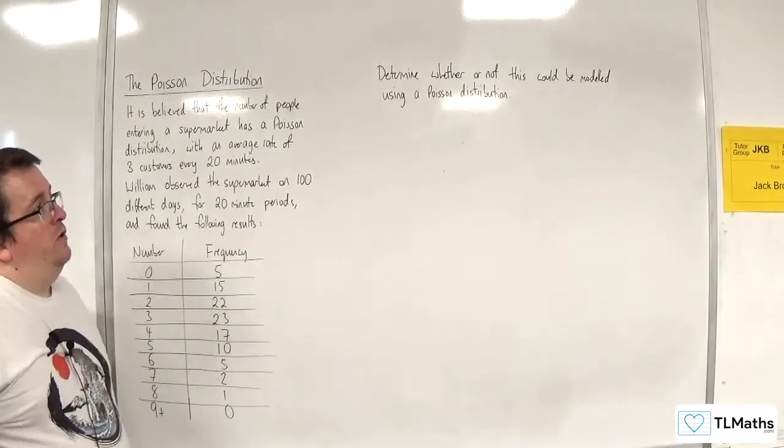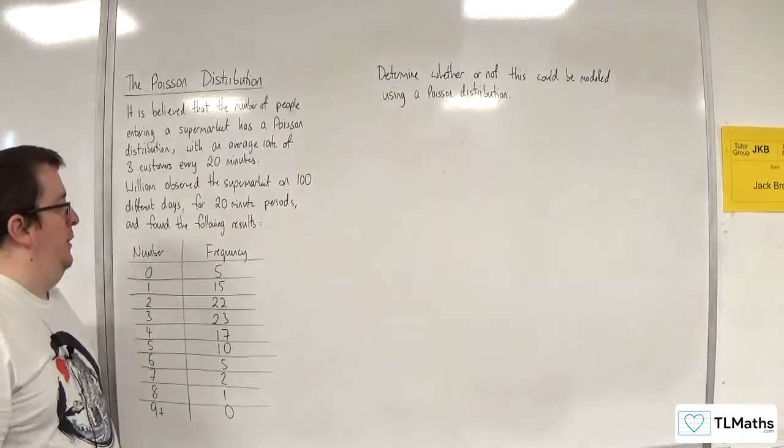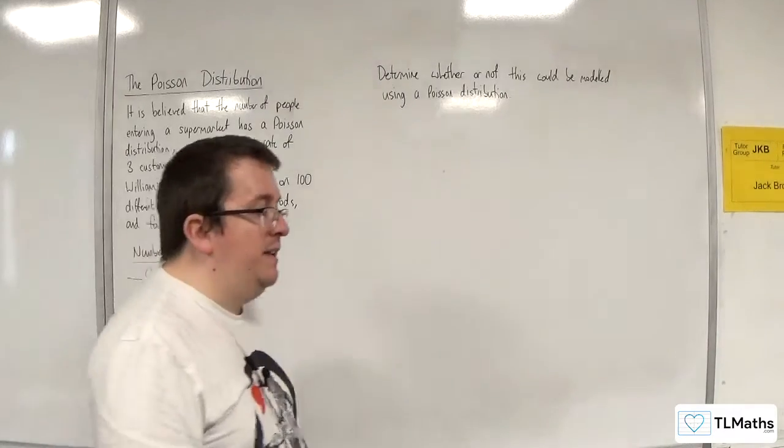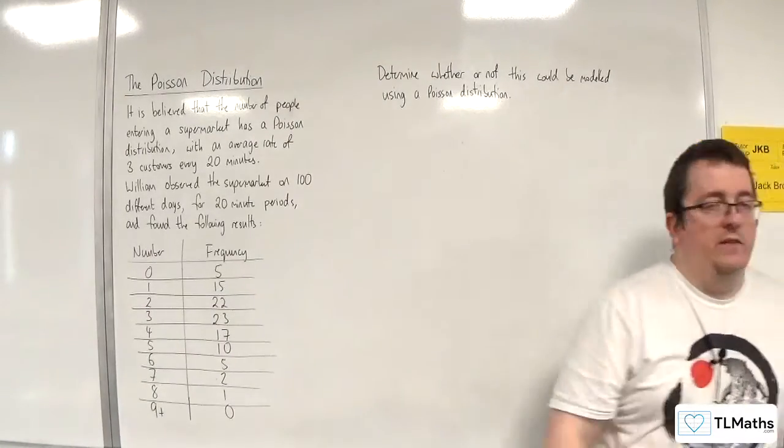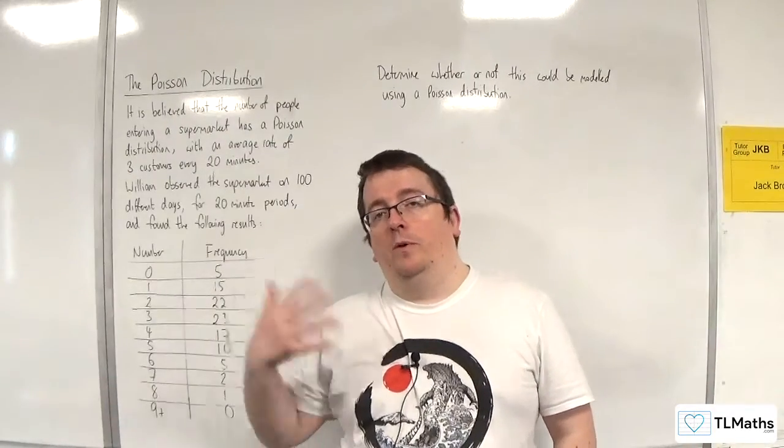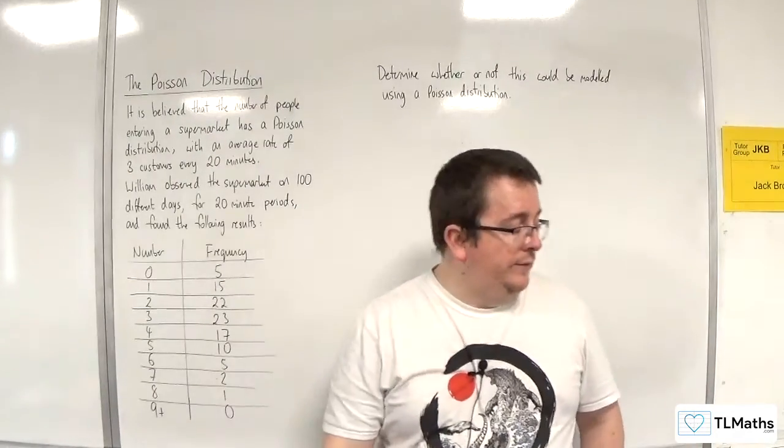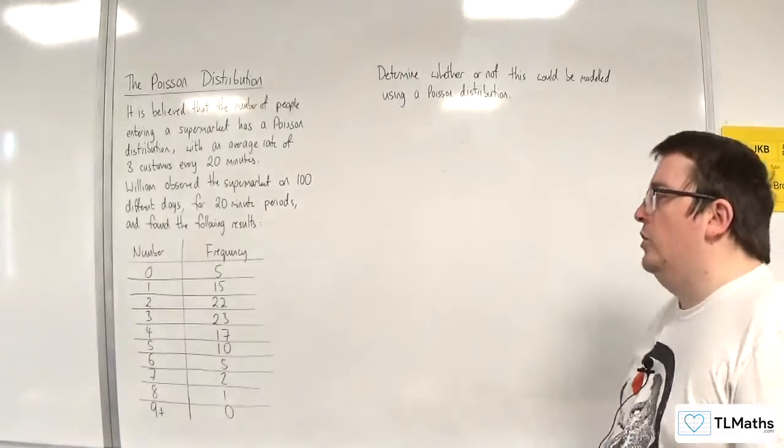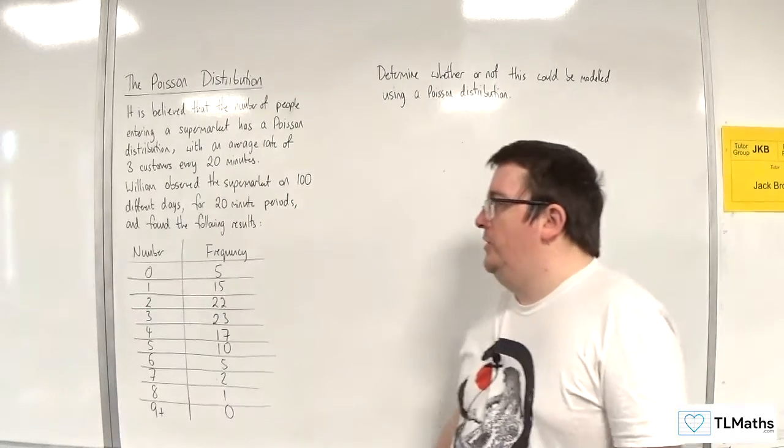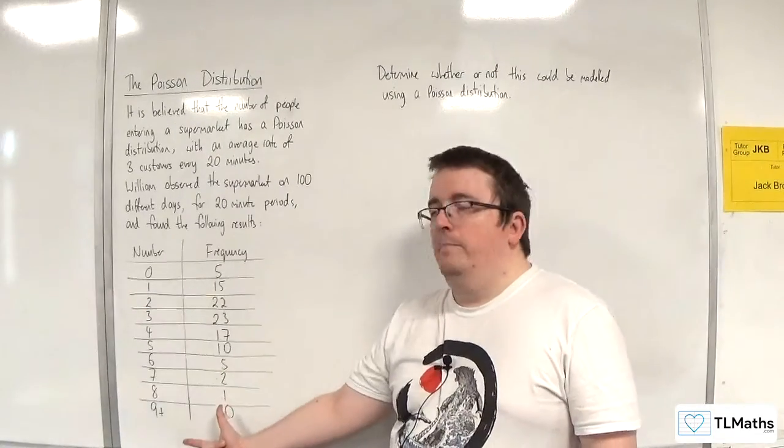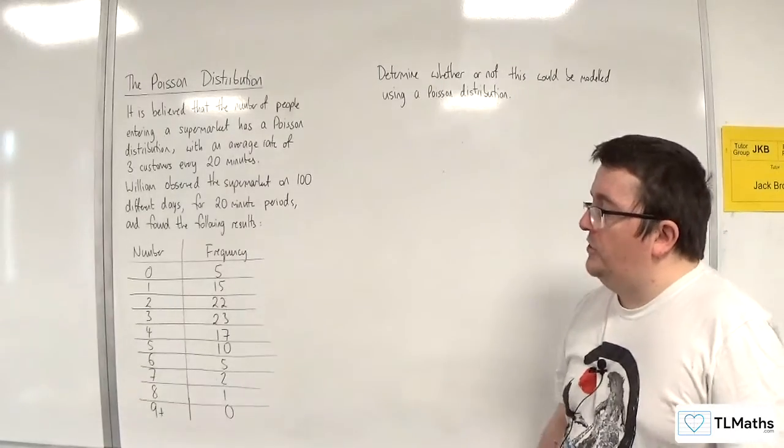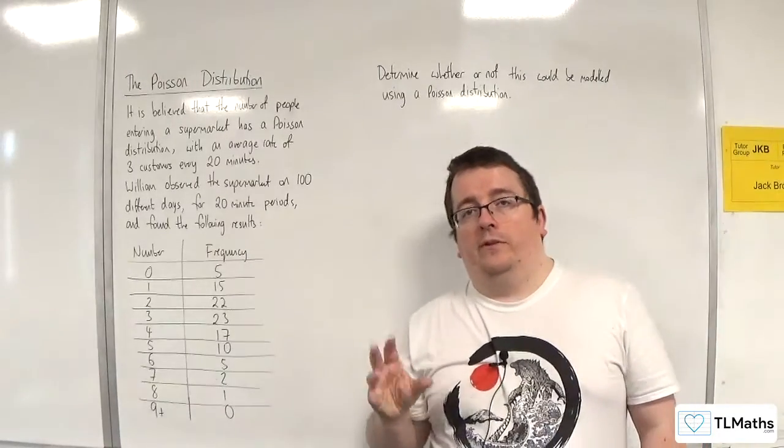So determine whether or not this could be modeled using a Poisson distribution. This is laying the groundwork for looking at goodness of fit tests, which is what we're going to do with the next section after this. But what can we do with our current understanding? Well, I could work out the mean and variance of this frequency table, of this data, and then I could see whether those two numbers are similar or not.